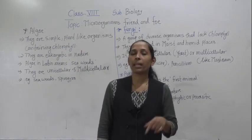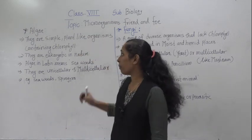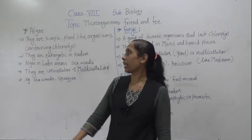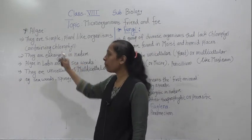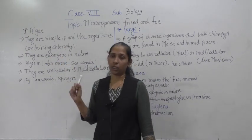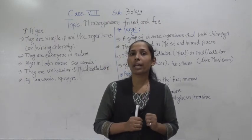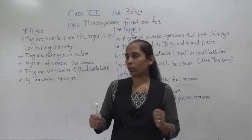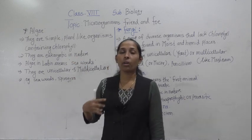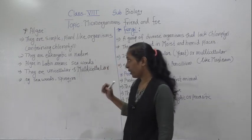Because algae contain chlorophyll, they can make their own food with the help of the photosynthesis process. The next point is that algae are eukaryotic in nature. Eukaryotic means they have a well-developed and well-organized nucleus with a nuclear membrane. So algae are eukaryotic in nature, and a well-organized nucleus is present in their cells.